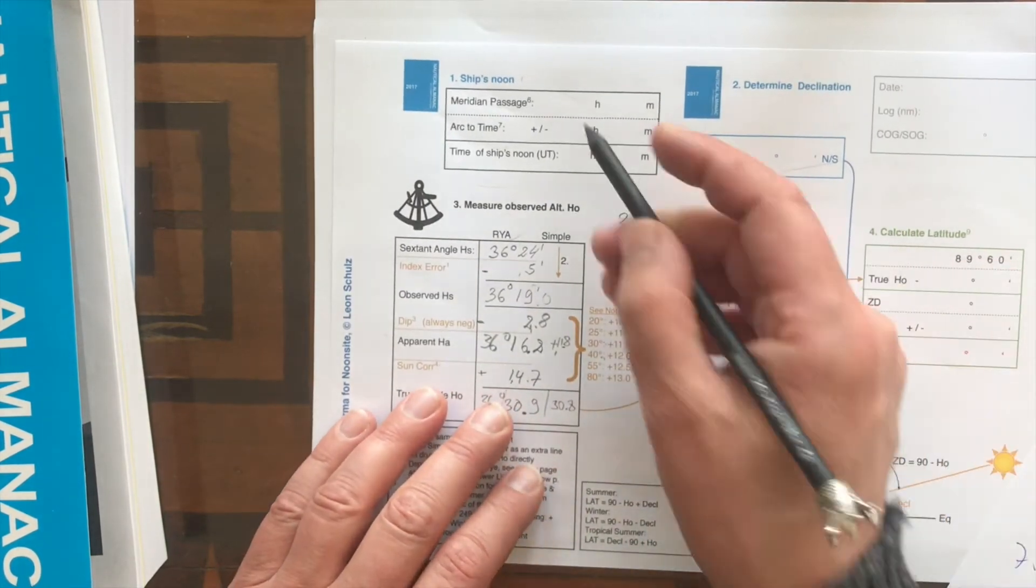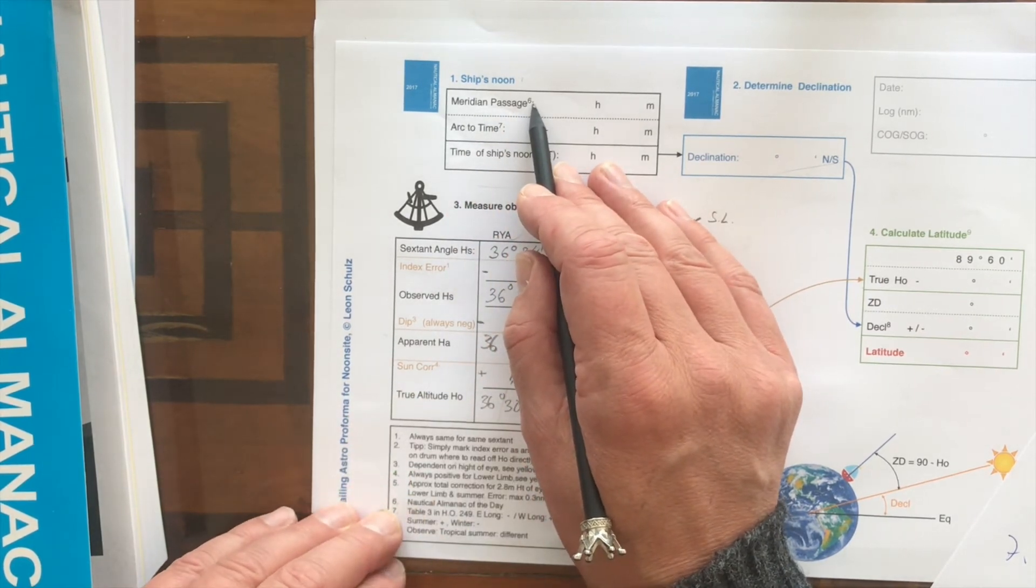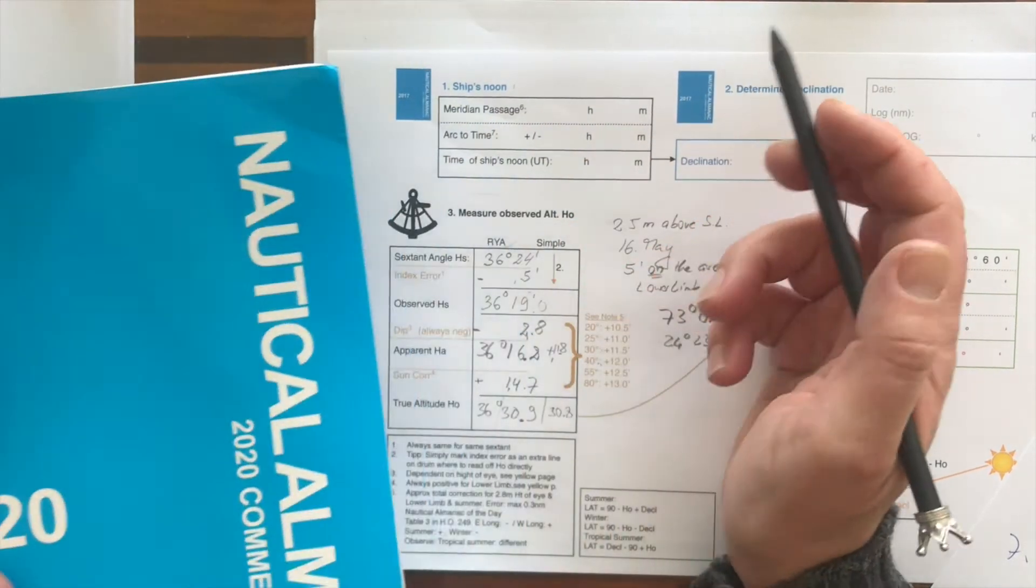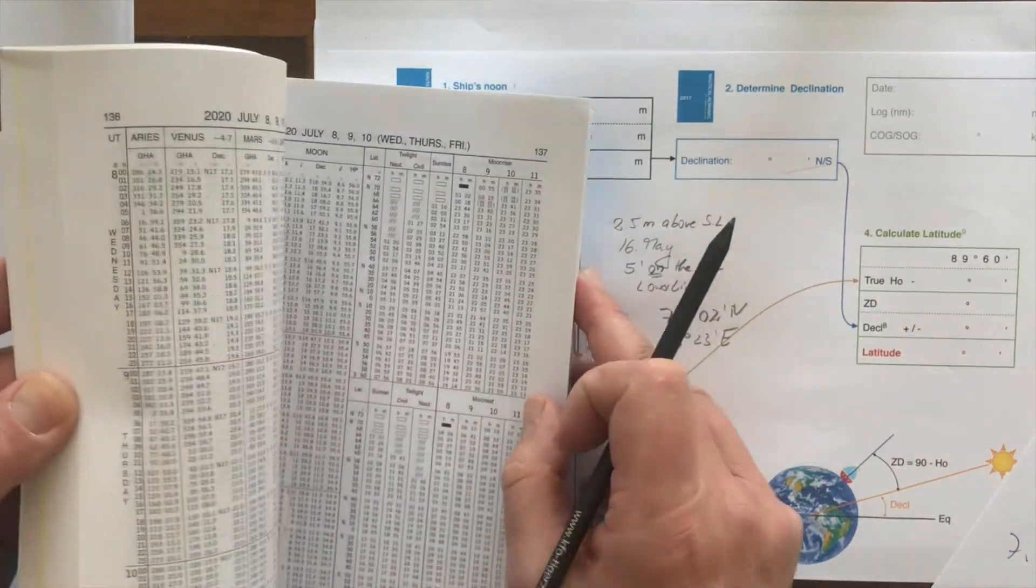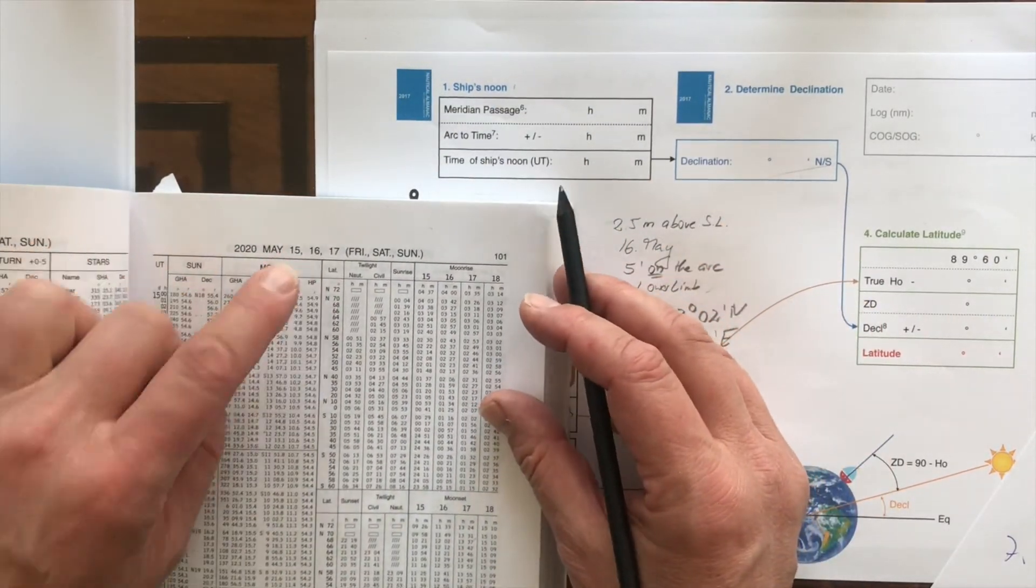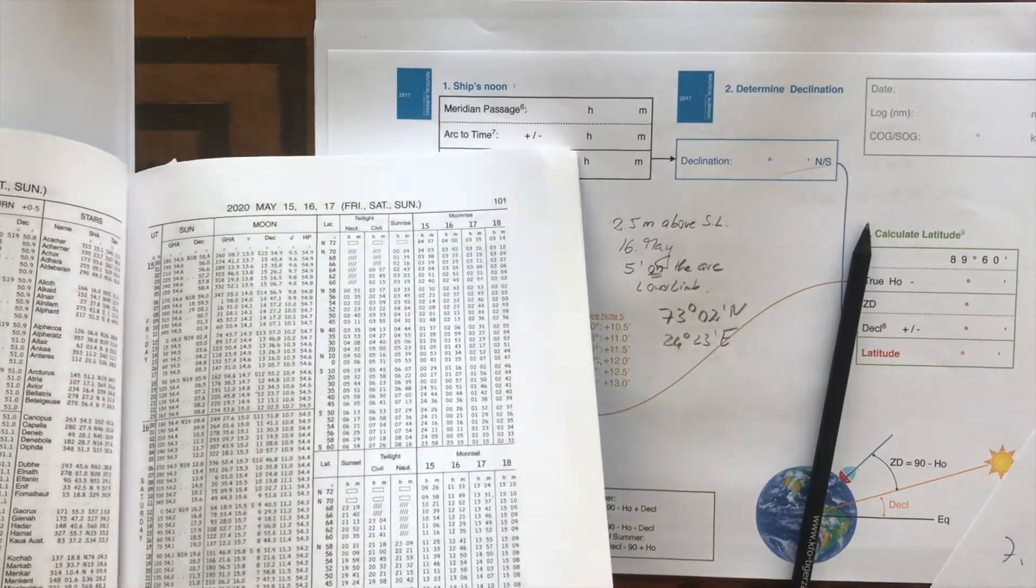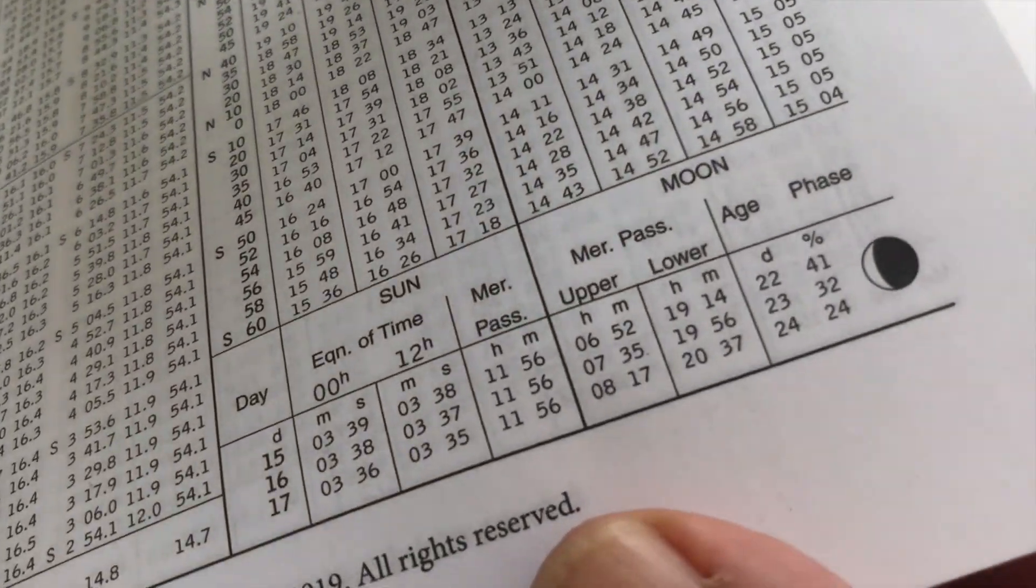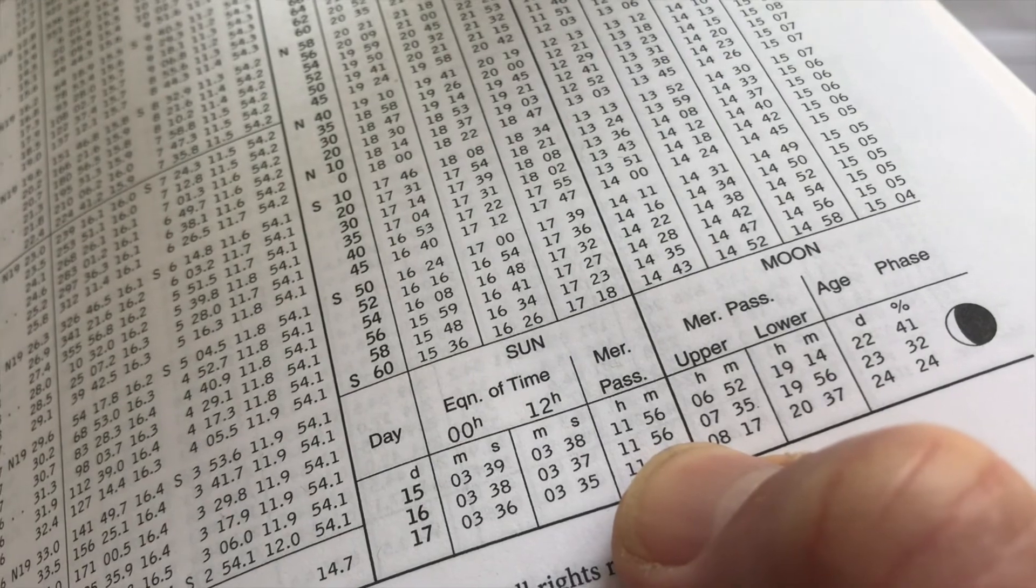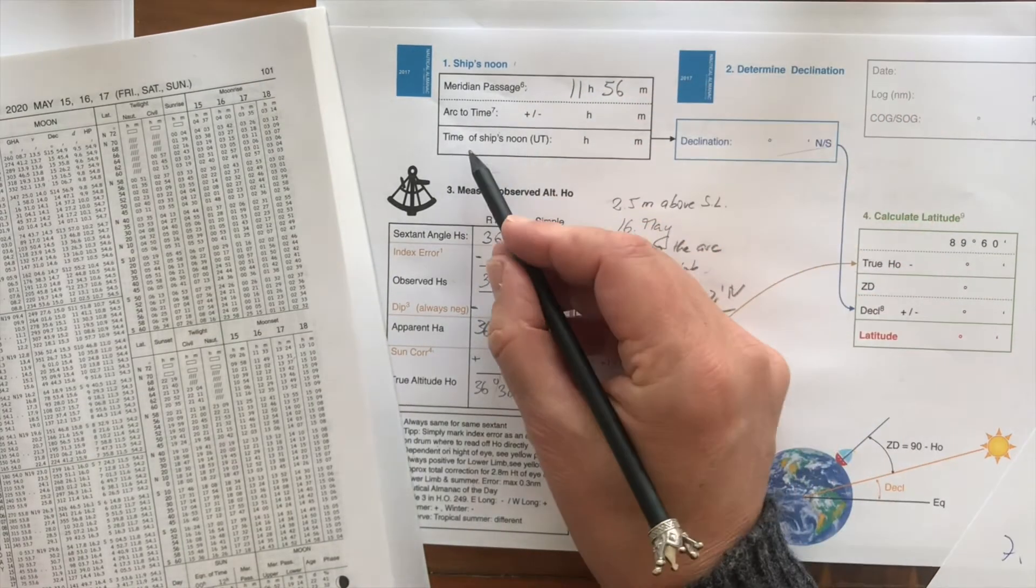I have here to calculate the ship's noon, I can write the meridian passage. It says footnote 6, nautical almanac of the day. We have it on the day, that's 16th of May. So let's look up May, 16th of May. When does the sun pass in Greenwich? You can see here on the 16th it passes at 11:56. So I'll write down 11:56.